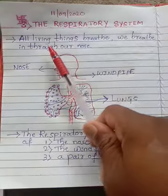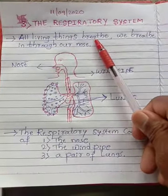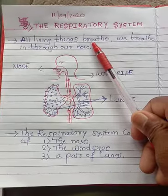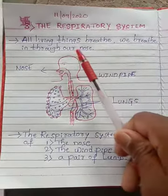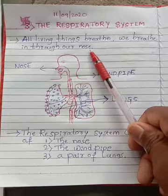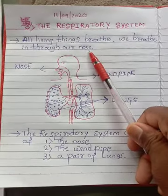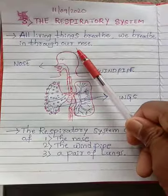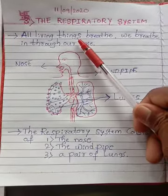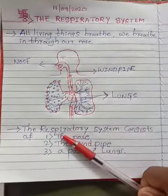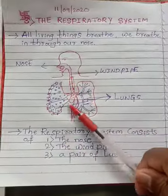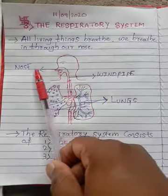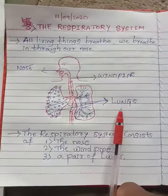As you know, all living things breathe — yes or no? All living things breathe and also need food and water. We breathe in through our nose. I have drawn here one important diagram of the respiratory system. Look here — these are the organs of the respiratory system.